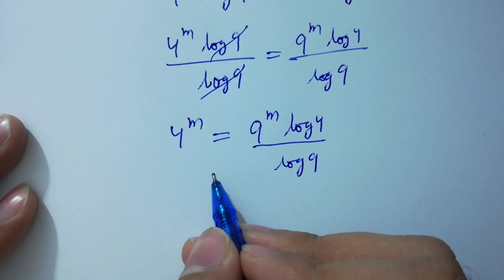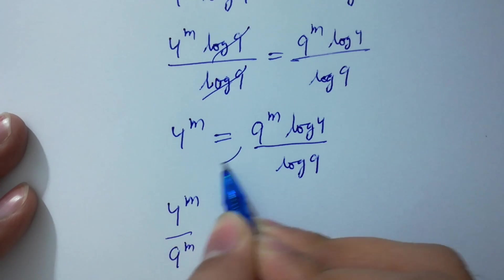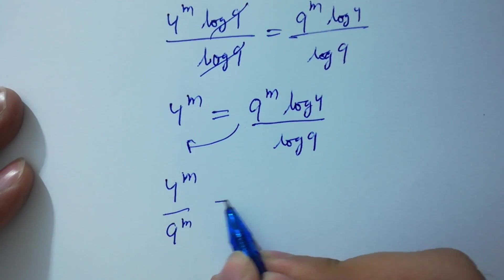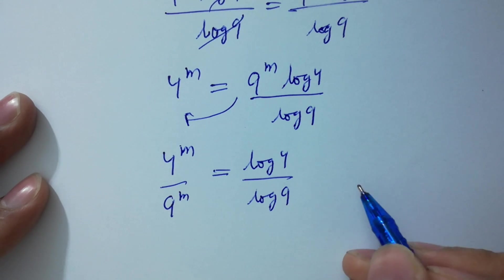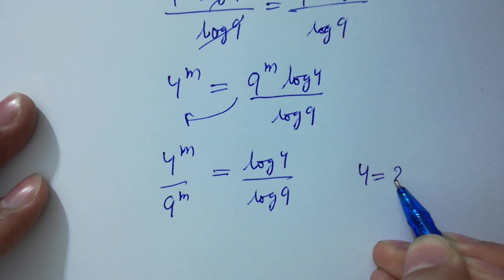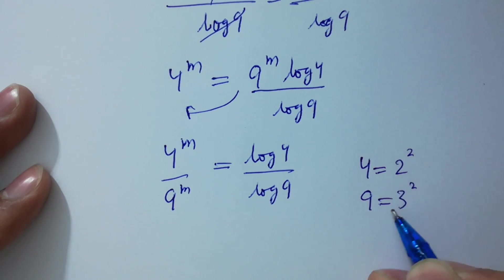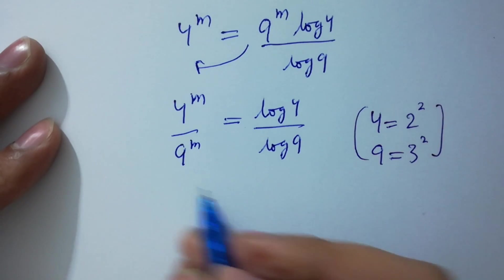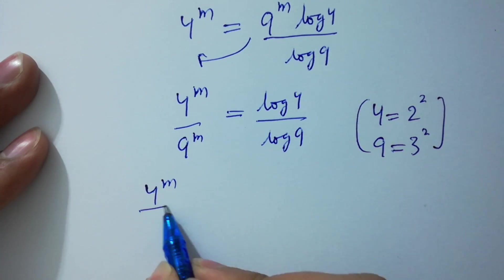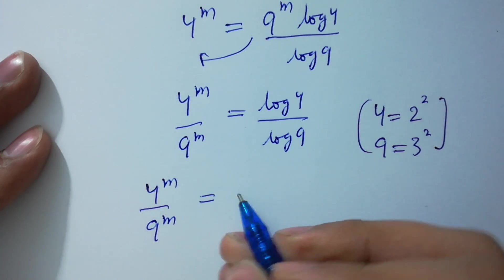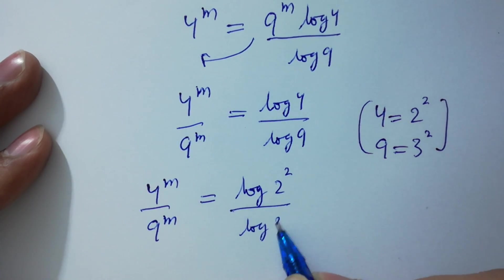This is the same as 4 to the power m over 9 to the power m equal to log 4 over log 9. Since 4 equal to 2 squared and 9 equal to 3 squared, we have 4 to the power m over 9 to the power m equal to log 2 squared over log 3 squared.